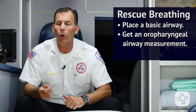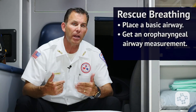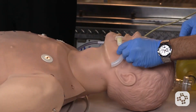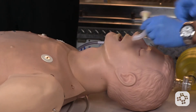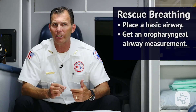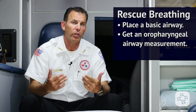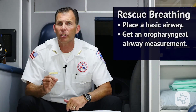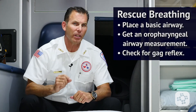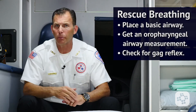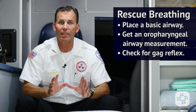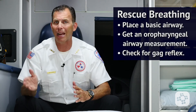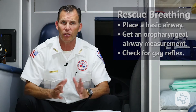An oropharyngeal airway, or OPA, is measured by placing it alongside the patient's face from the corner of the mouth to the lower tip of the ear. If the OPA is longer than this area or too big, it could cause a blockage and defeat the purpose. We will always check for a gag reflex before attempting to place an OPA. If there is a gag reflex, don't attempt an OPA, as this can cause vomiting and complicate airway management and oxygenation.